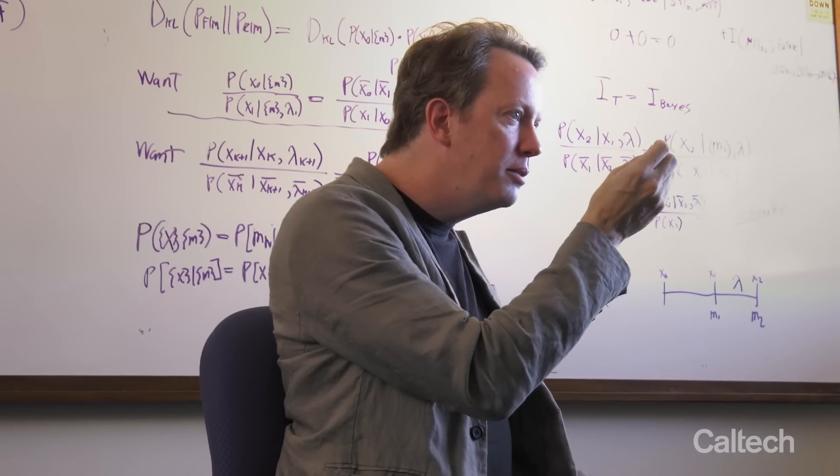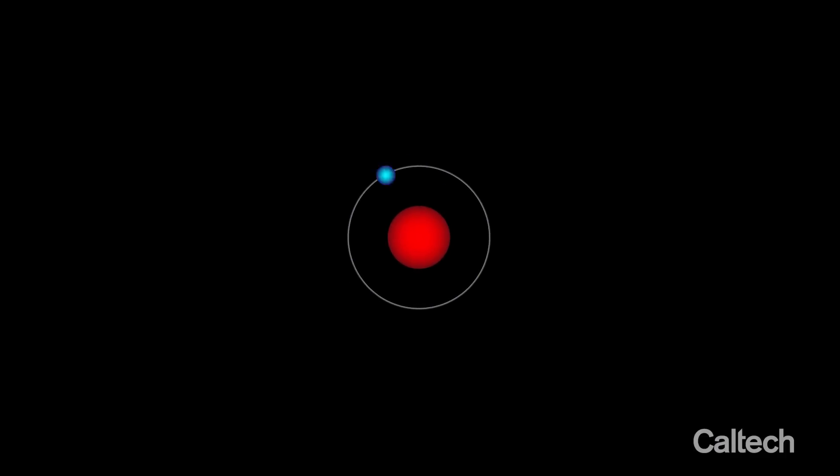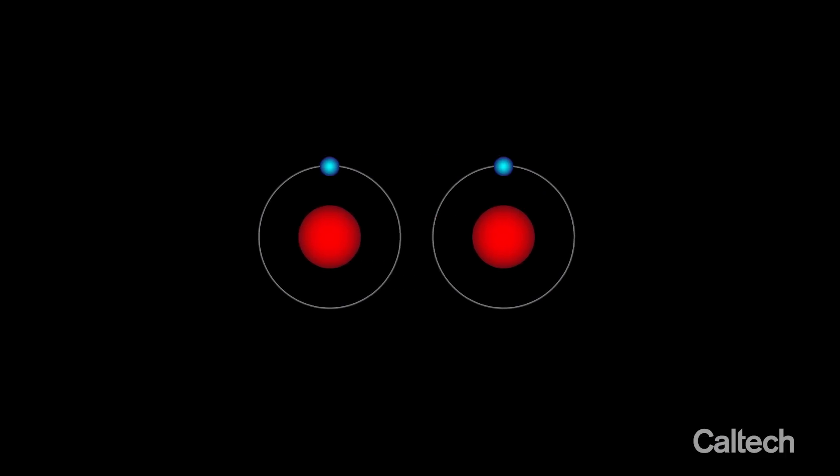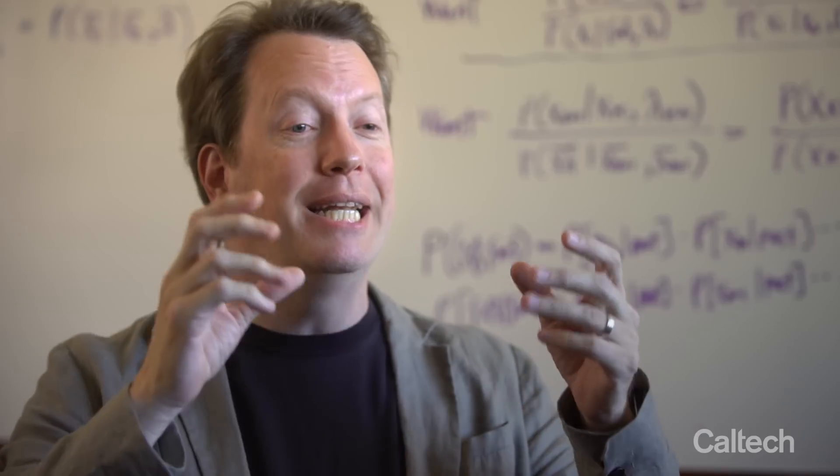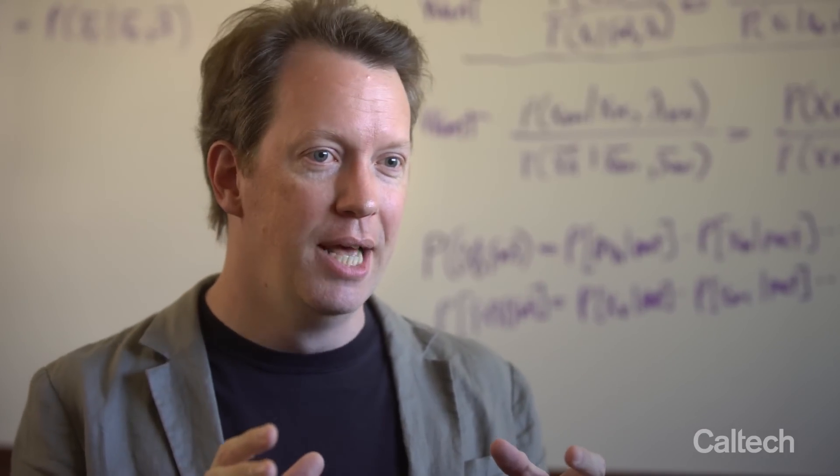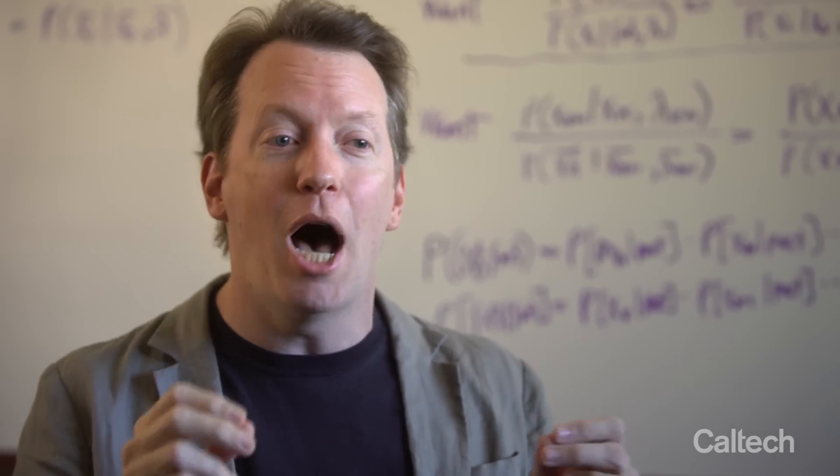You can imagine an electron. It's either spinning clockwise or counterclockwise. But now imagine two electrons. They could both be in a superposition of clockwise and counterclockwise, but an entangled superposition, so that we know they're both spinning in opposite directions.